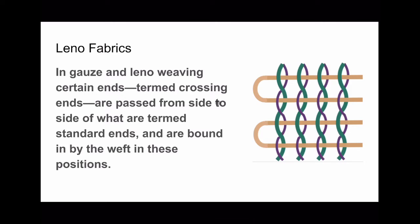In lino weaving there are two strands of warp yarns — one is termed as the crossing end and the other is called the standard end. The crossing end moves from one side to the other side of the standard end in between the picks. If we term the green end as the standard end and the purple yarn as the crossing end, we can see that this purple end changes its side from left to right in between the picks. For the first pick it is on the left side, then for the second pick it goes on the right side, and these are locked in by the weft yarns in this crossover condition.